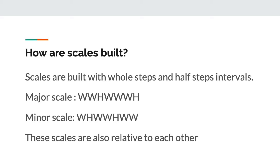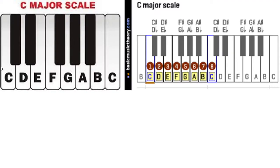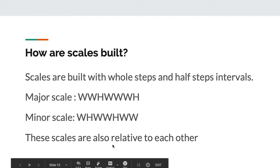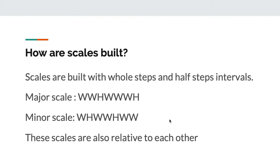The two primary scales used in western music — in almost every song — are the major scale and the minor scale. These two scales are also relative to each other. This sequence of whole steps and half steps is used to create all 12 major scales. If you know this, you know how to build every scale.